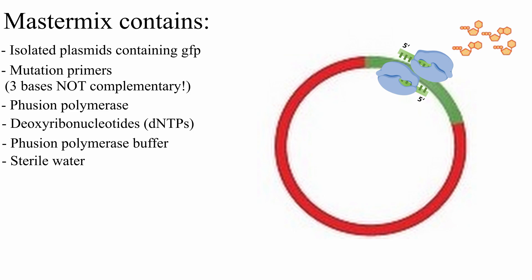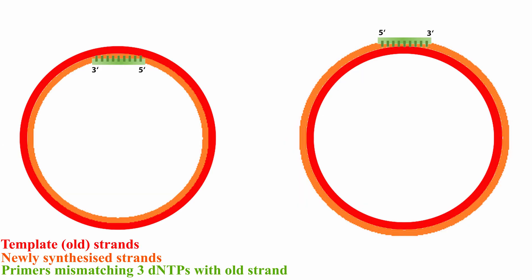In this reaction the plasmids will be replicated resulting in plasmids with one old strand and one new strand. The new strand contains a mutation which will lead to YFP so we have to make sure that two new strands will connect together.